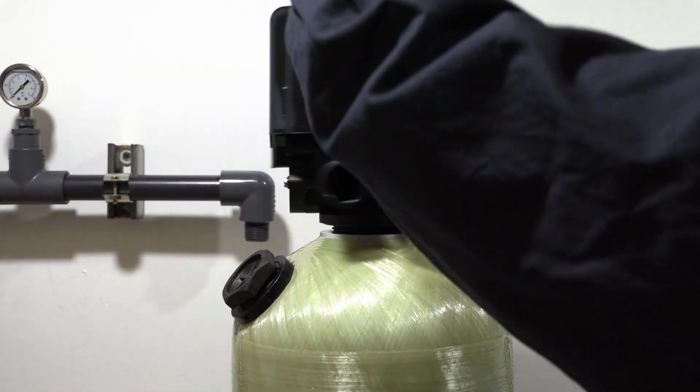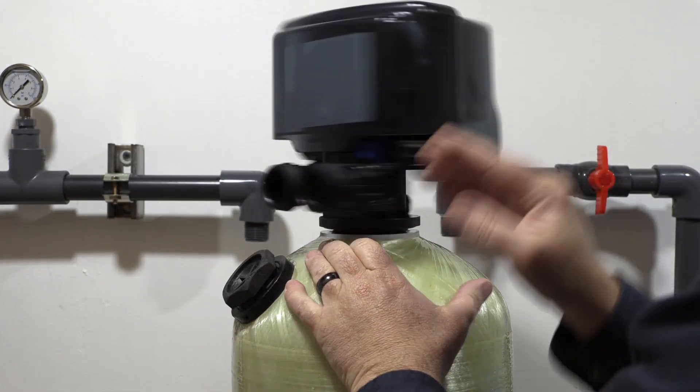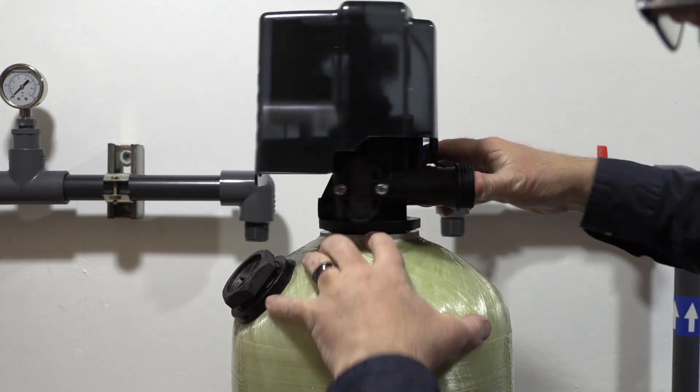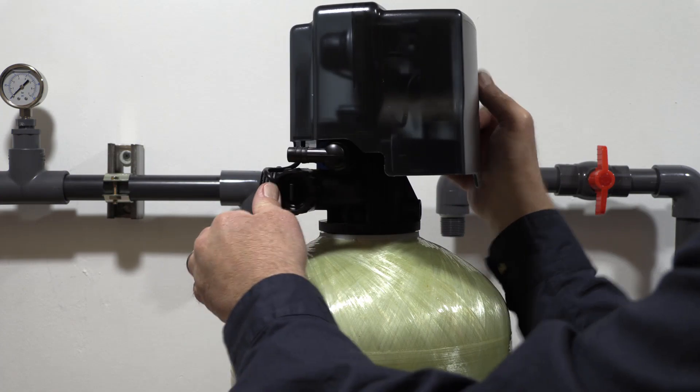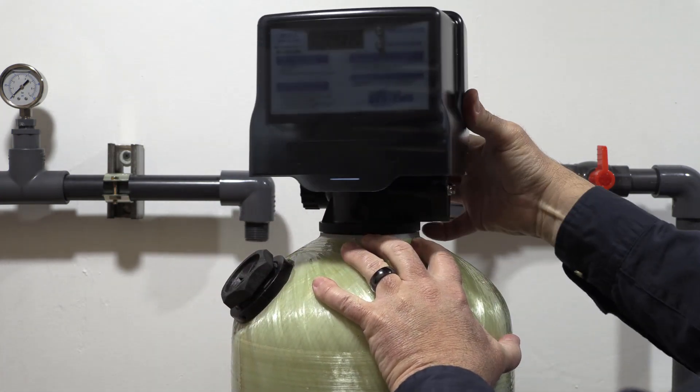Then we'll go ahead and install the valve. Again, you only want to hand tighten these valves down to seat on the O-ring. You don't want to use any kind of wrench or anything on them. You could possibly crack the housing.